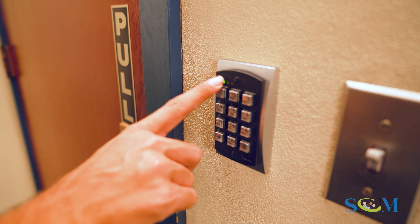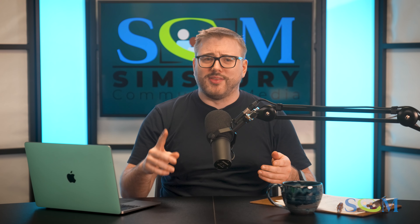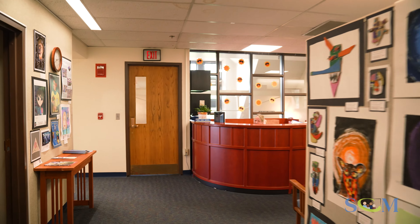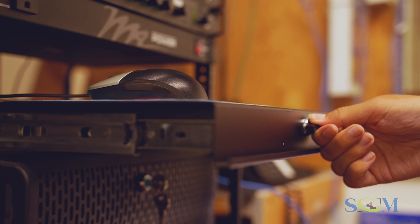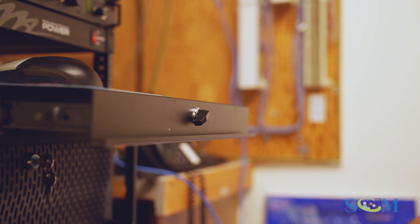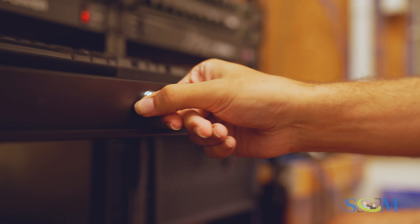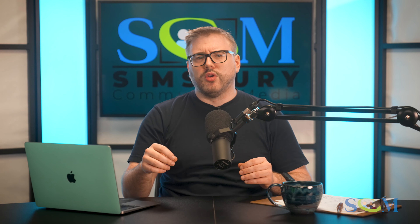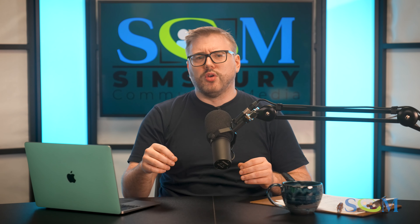Now that the microphones are placed in the proper positions, head upstairs to the Board of Education. To get upstairs, enter your code in the keypad to unlock the door. If you don't have a code, please contact the station manager. Head to the closet past the Board of Education meeting room. Here you'll find the PC used to operate the robotic cameras in the main meeting room. Under the monitor, there's a pullout tray that holds the keyboard and mouse. Turn the knob to the left, lock the tray and pull it out. From here, wiggle the mouse or press any key on the keyboard to wake up the computer.